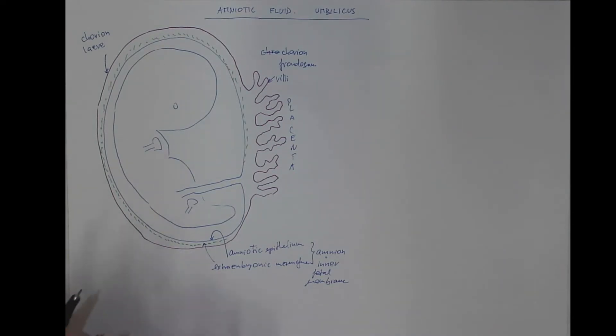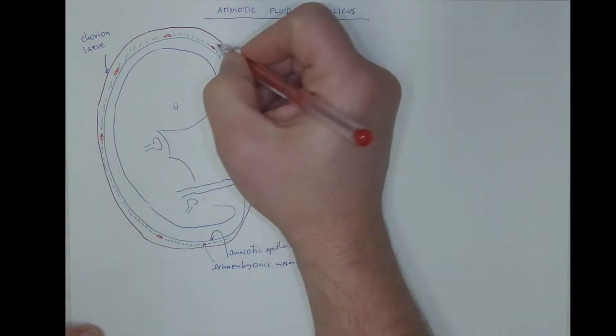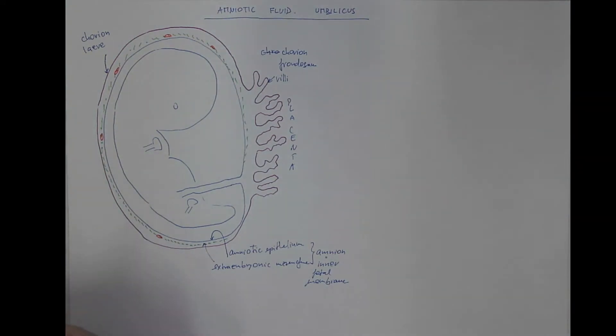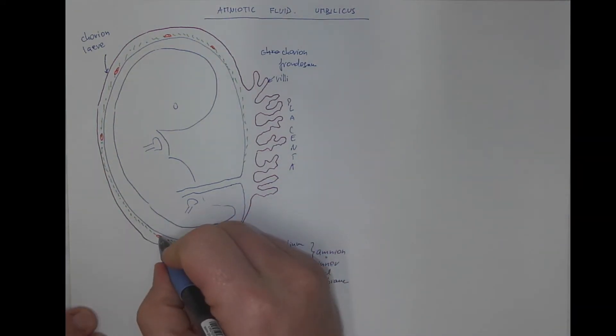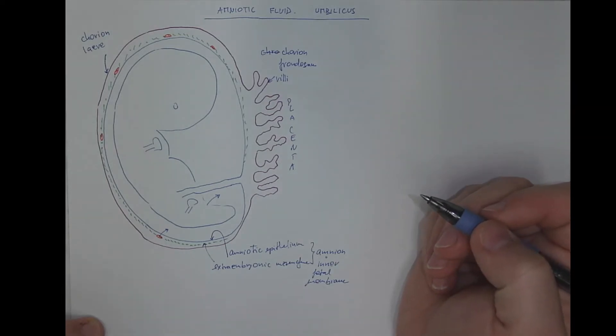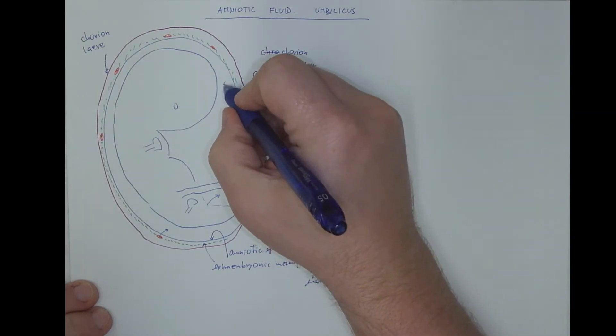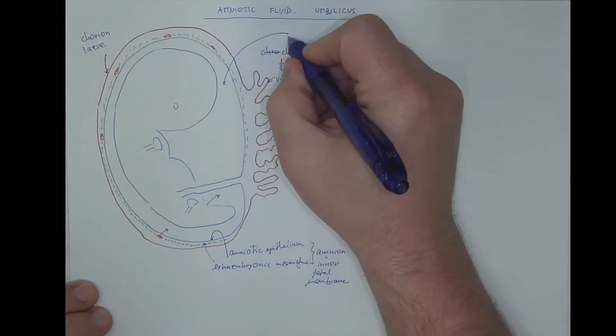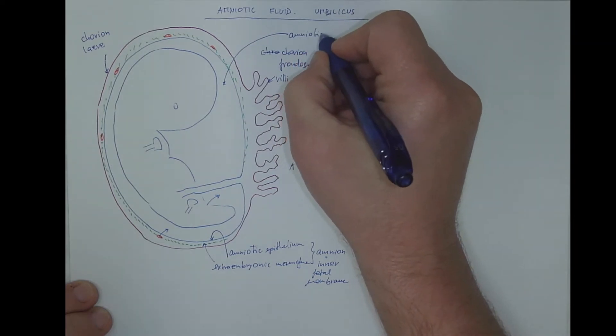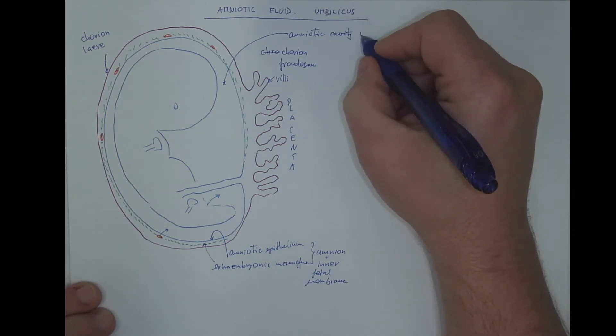The extra embryonic mesenchyma contains blood vessels. And the transudation of the plasma contributes to the formation of the amniotic fluid. However, a really significant contribution is the urine of the embryo or the fetus. So, we got this space called the amniotic cavity, which is filled with amniotic fluid.